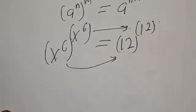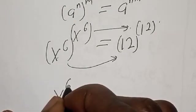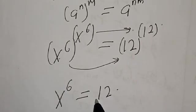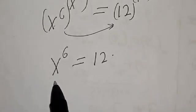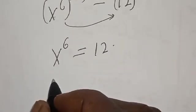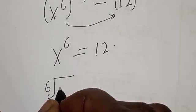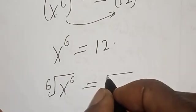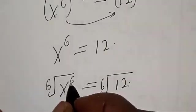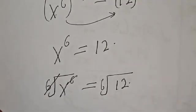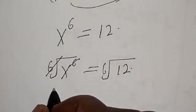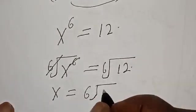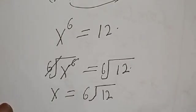Therefore, we have s raised to power six is equal to 12. And remember that we are asked to find the value of s. Let's take the sixth root of both sides: the sixth root of s raised to power six is equal to the sixth root of 12. The sixth root cancels the exponent, then s is equal to the sixth root of 12.